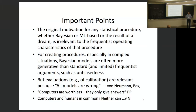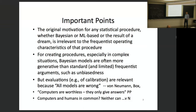For creating procedures, especially in complex situations, I think Bayesian models are often better at generating ideas for procedures than standard frequentist arguments. And I think that's also consistent with machine learning. Because machine learning people are very creative at just making things up — they don't try to satisfy any formal property. They just think, 'here's a good idea, let me see how well it works.'